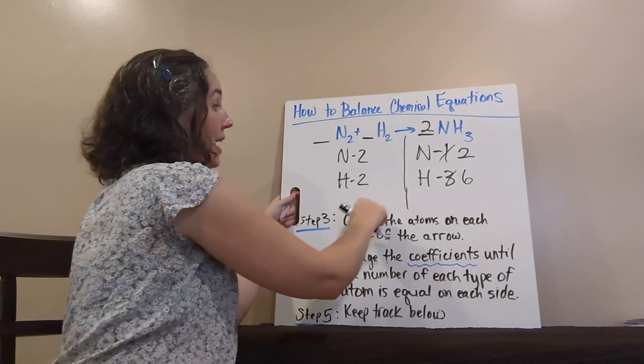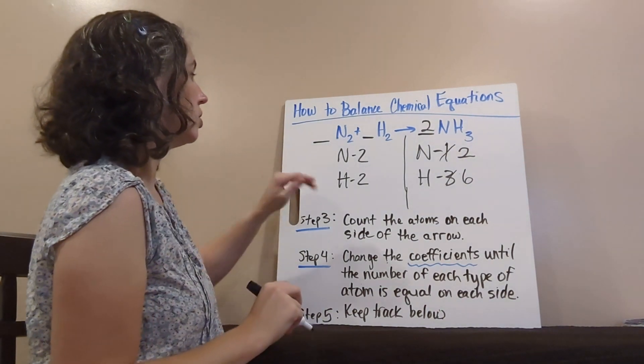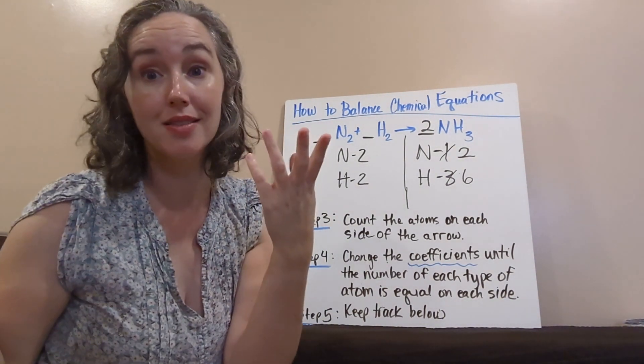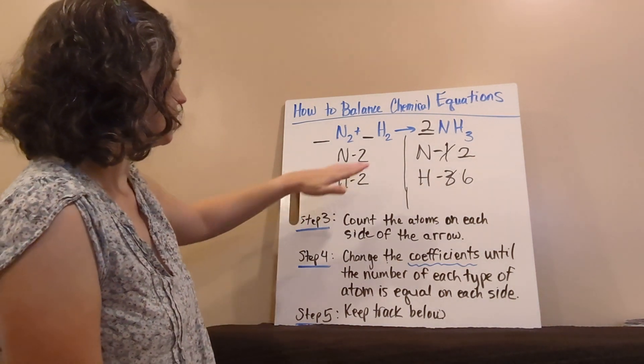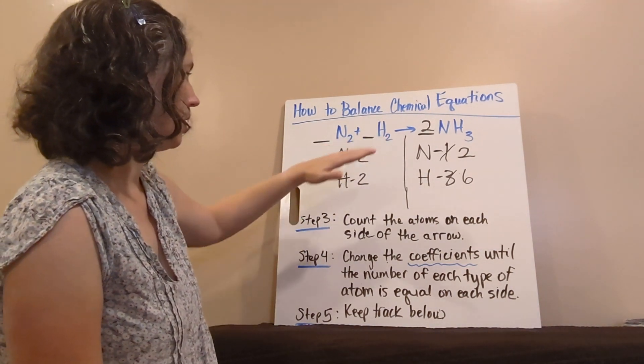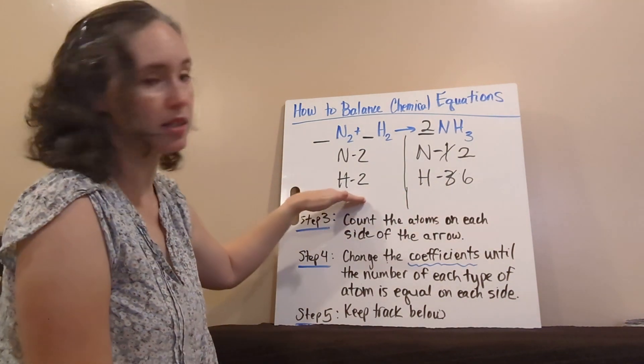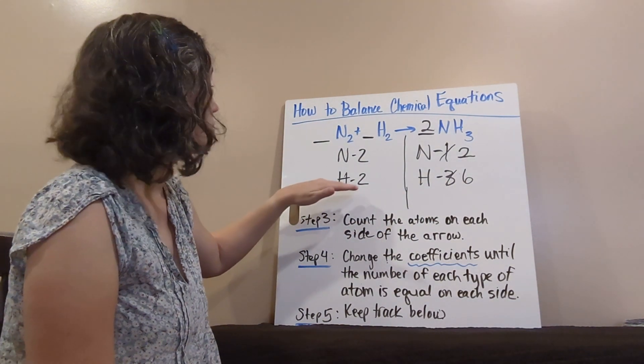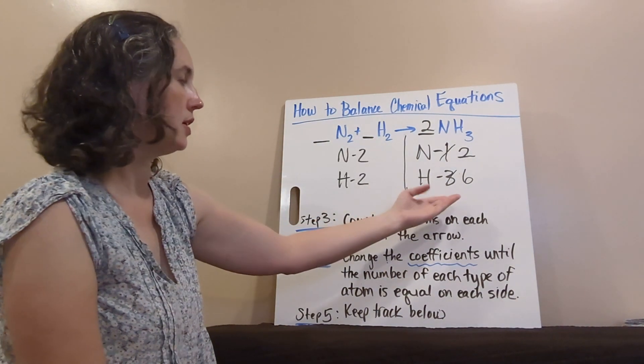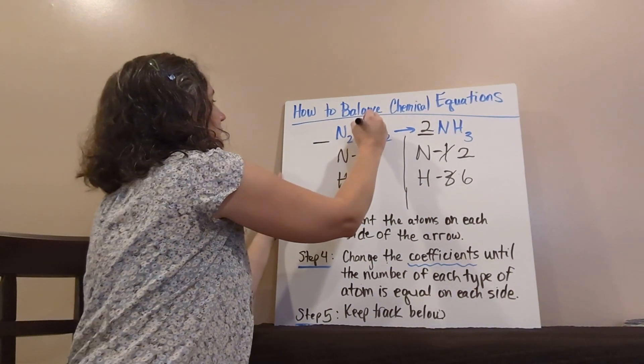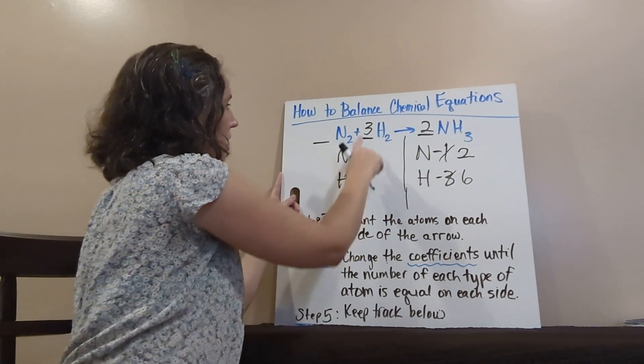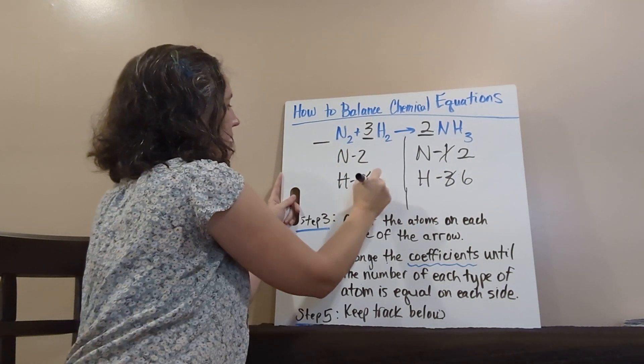My hydrogens are now unbalanced, and so are even more unbalanced than they were before. So, what can I do in front of hydrogen that will balance six and two? Well, two times what is six? Two times three is six, so I can put three here. Three times two is six.